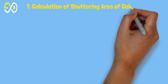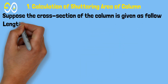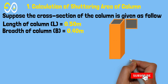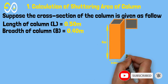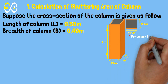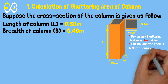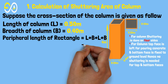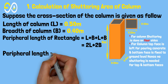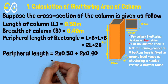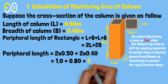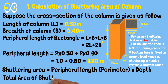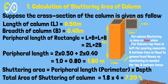Calculation of shuttering area of a column. Suppose the cross-section of the column is given as follows: length of column equals 0.50 meters, breadth of column equals 0.40 meters. Peripheral length of rectangle equals 2 times 0.50 plus 2 times 0.40, which equals 1.0 plus 0.80, equals 1.80 meters. Shuttering area equals peripheral length times depth. Total shuttering area of column equals 1.8 times 4 equals 7.20 square meters.